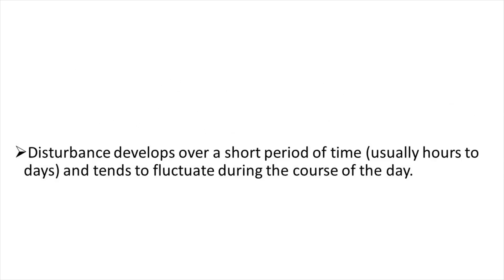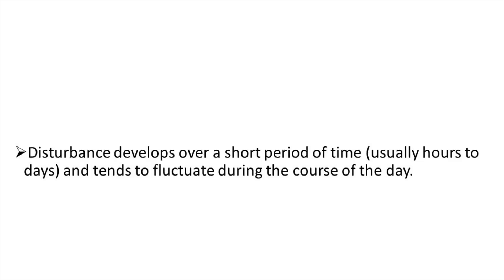Third, the disturbance develops over a short period of time, usually hours to days, and tends to fluctuate during the course of the day. Fourth, evidence of an etiologic cause, which the DSM-IV uses to classify delirium as: delirium due to general medical condition, substance-induced delirium, delirium due to multiple etiologies, or delirium not otherwise specified.